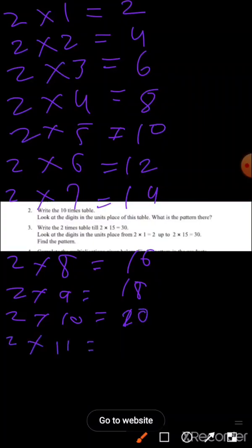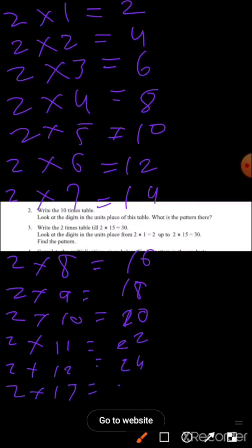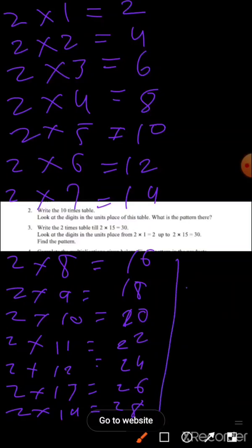Two times eleven is twenty-two. Two times twelve is twenty-four. Two times thirteen is twenty-six. Two times fourteen is twenty-eight. And two times fifteen is thirty.